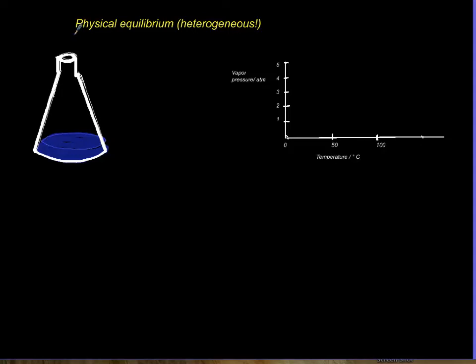Physical equilibrium is ultimately a heterogeneous reaction. It's between liquid and its vapor, so it's evaporation and condensation.